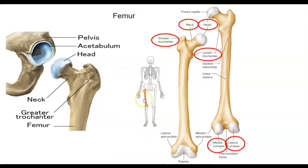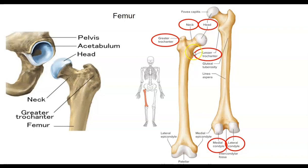Now let's look at the femur, the lower extremity. The acetabulum is on the hip bone, and that's where the head of the femur articulates. We have the head of the femur, the neck of the femur, and then two projections: the greater trochanter and the lesser trochanter. These same landmarks are visible on the posterior view as well. On the distal end, I'd like you to know the two condyles: the medial condyle and the lateral condyle. You can see those on anterior or posterior view, but they're easier to spot on the posterior.